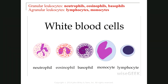If you pay attention to the shape of the nucleus of these leukocytes, the nuclei have different lobes — different parts. In the first one, you can see four different parts. In the second one, you have two different parts. And in the other one, again, you have two different parts. So granular leukocytes have polymorphonuclear nuclei. We classify them as neutrophil, eosinophil, and basophil, and I will talk about each of them specifically.